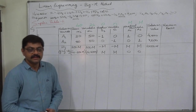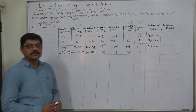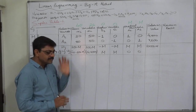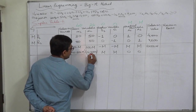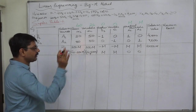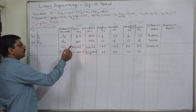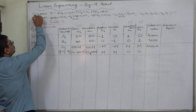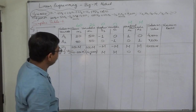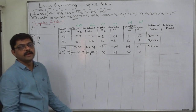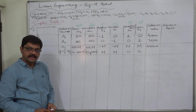Many senior teachers might criticize this type of explanation, but I want to make it very simple and clear for students. As a responsible teacher I should not suggest assuming a value for M, but it helps with understanding. So now we know that 24 − 100M is the lowest (most negative) delta j value. Since the objective is minimization, we select the lowest delta j value, which is always negative.